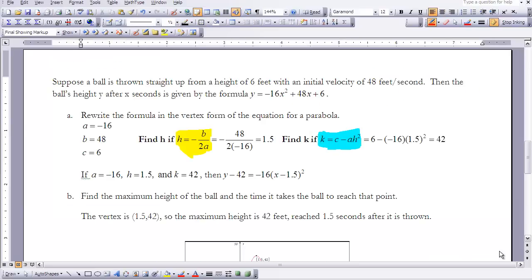Let's see how we can apply the second method to this next problem. Suppose a ball is thrown straight up from a height of 6 feet with an initial velocity of 48 feet per second. The ball's height y after x seconds is given by the formula y equals negative 16x squared plus 48x plus 6. We want to rewrite the formula in vertex form. We have y equals negative 16x squared, so that's our value for a. Then plus 48x, so that's our value for b. Then plus 6, that's our value for c. I've identified my ABCs. I know h equals the opposite of b over 2a, and k equals c minus ah squared.